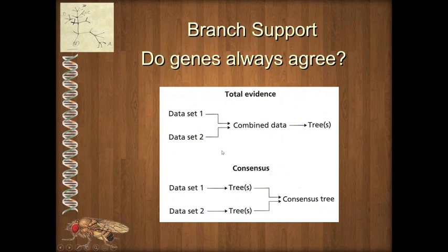Even if there's nothing unusual making a gene tree conflict with species relationships, you can still have data that is close to being saturated. You can have long branch attraction and a number of things where one gene gives evidence for some relationships while another contradicts it. The idea is if our data sets are large enough, all of those contradictions and errors will even out, becoming like background noise, and the phylogenetic signal in different genes will combine to give the overall best answer.